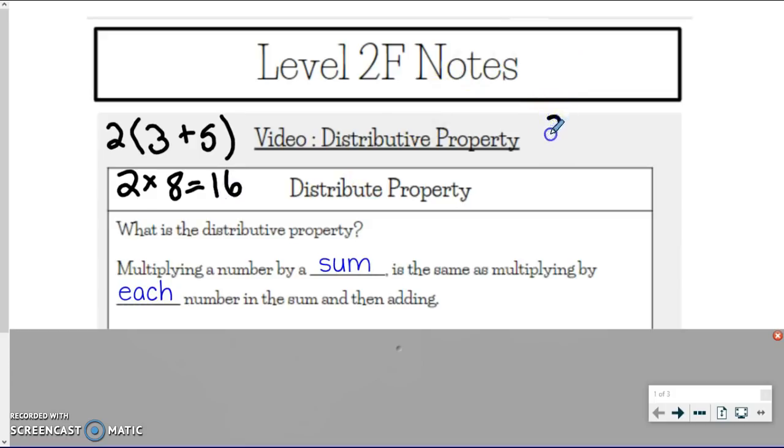Here's another way I could solve it. So I got the same problem. I got 2 times the 3 plus 5. And so what I could do instead, instead of adding these numbers together first and then multiplying, I could do 2 times 3 and then 2 times 5 and then add them together. So 2 times 3 is 6, plus my 2 times 5, which is 10. And when I add those together, I also get 16.